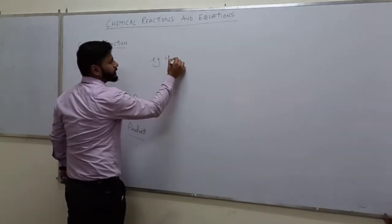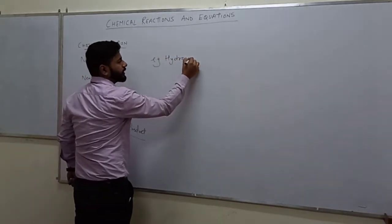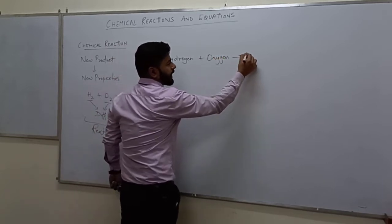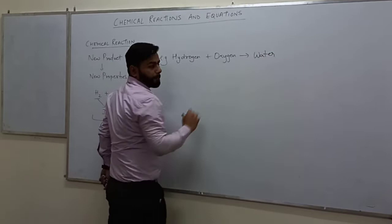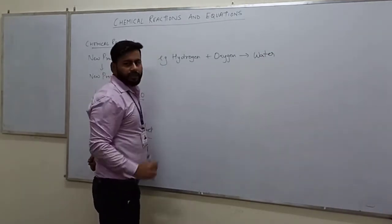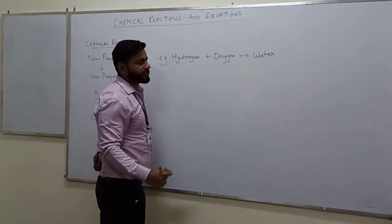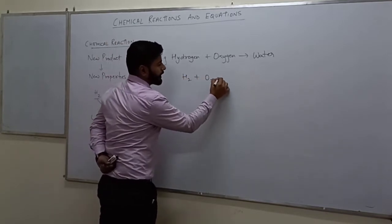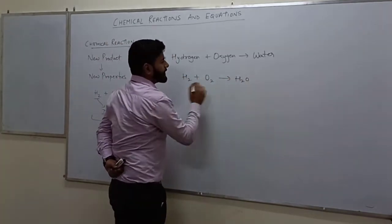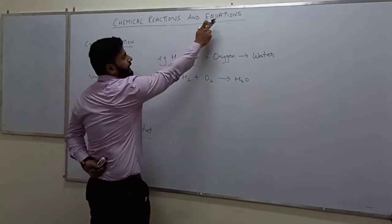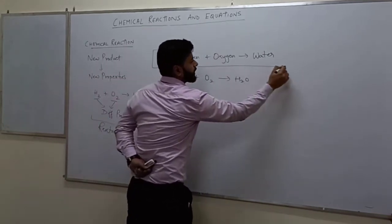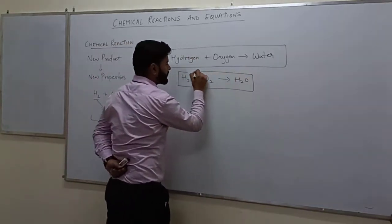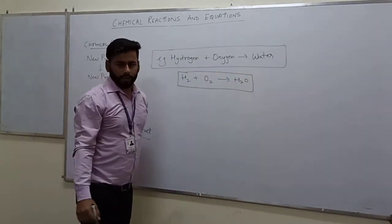If we write hydrogen plus oxygen will give water, it basically represents a chemical reaction. But if we will write this reaction in symbolic form, that is the symbolic representation, it will represent a chemical equation. So the basic difference between chemical reaction and equation is: this is a chemical reaction, and if it is represented in the form of symbols, then it will be called a chemical equation.